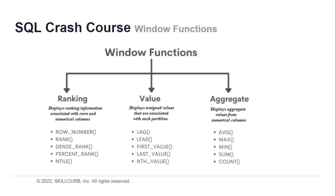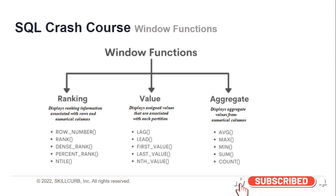An important part of window functions is the PARTITION BY clause. The PARTITION BY clause divides a result set into partitions and performs a computation on each partition data subset. The OVER clause is also used in window functions — it indicates that a function will be applied to all the rows returned by a query.